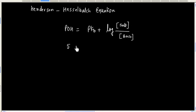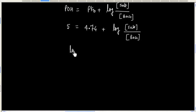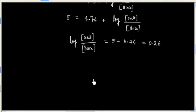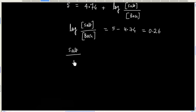pOH is 5, pKB is 4.74. So ratio of these two concentrations is equals to 10 raised to the power 0.26.